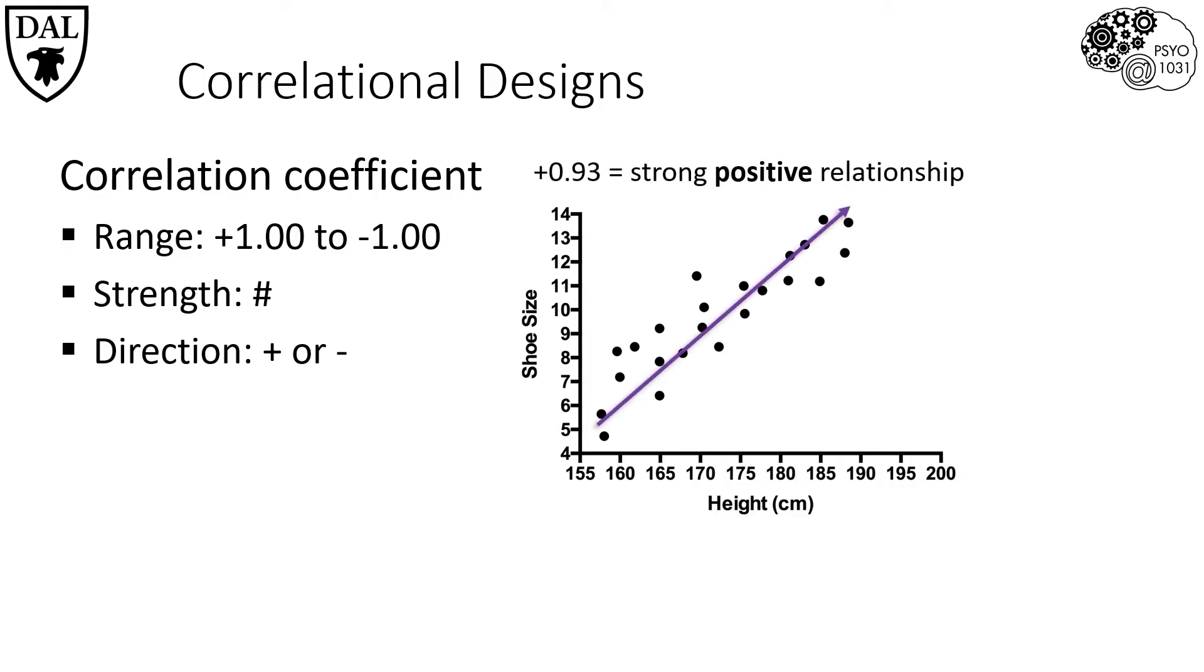Because the values increased together in the same direction, with the correlation coefficient of 0.93, which is a strong positive correlation since it's quite close to positive one. This is not surprising since taller people tend to have larger feet than smaller people.